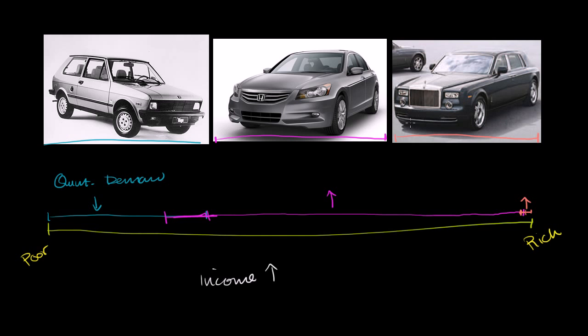But assuming this is the most expensive, this is the middle, and this is the cheapest, this would be true of probably any price point. So we have this phenomenon that when income went up, the quantity demanded at multiple price points for this car changed.